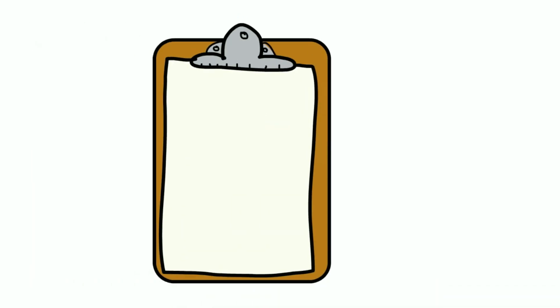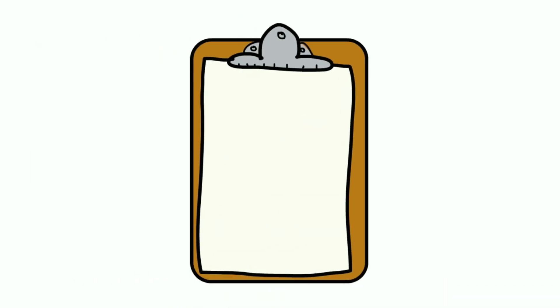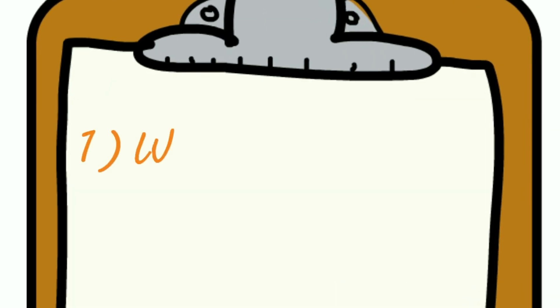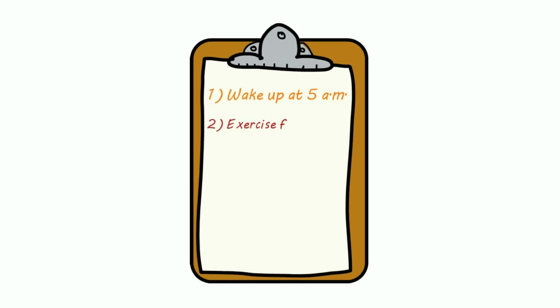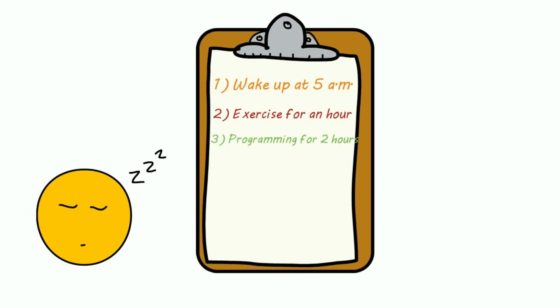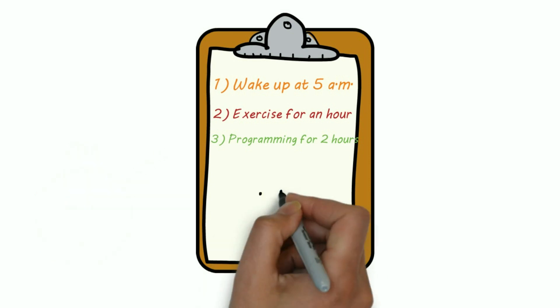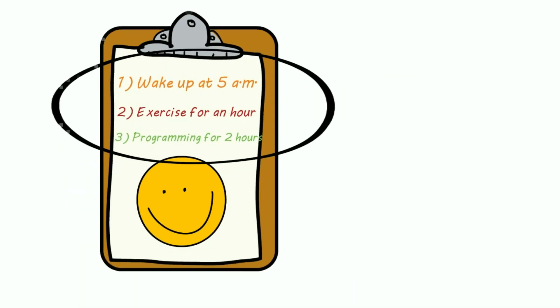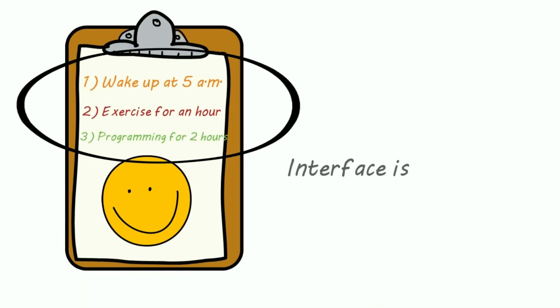Hi guys, I hope everyone knows about a to-do list. For example, a to-do list of a computer science student might look like this: wake up at 5, exercise for an hour, programming for two hours. So if the person is not lazy like me, then he'll complete all his tasks. So interface is like our to-do list.